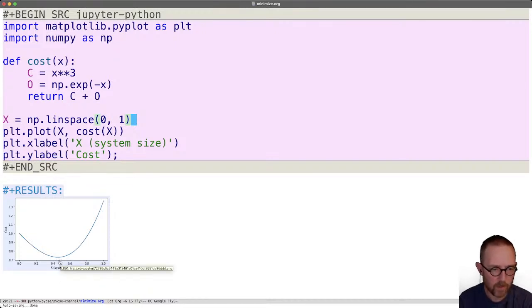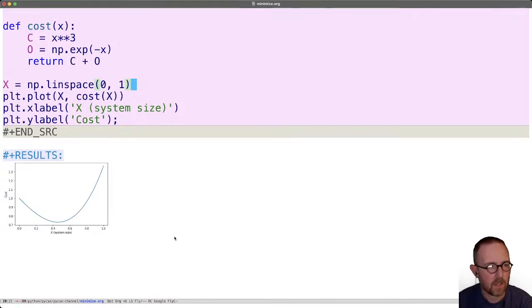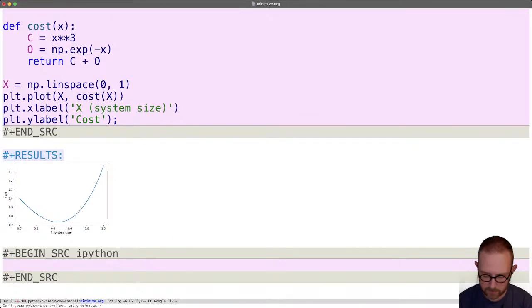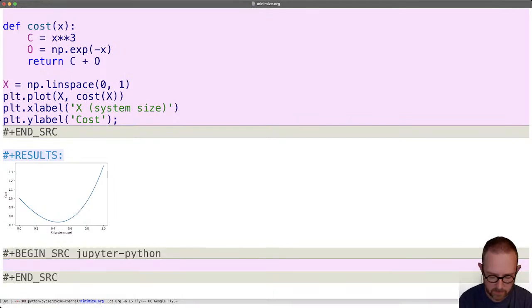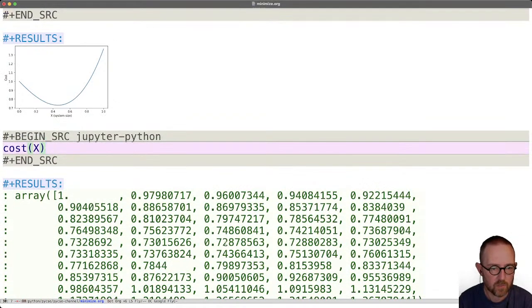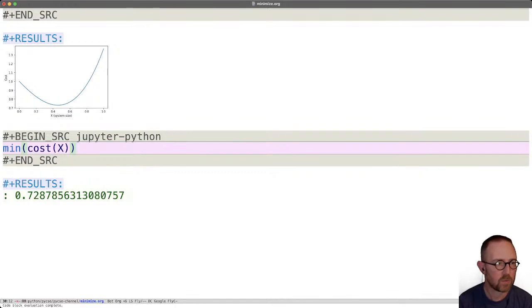Now we could work out a better idea of where that is. So if we just look at the cost of x, that's just an array of all of these points. And you could just look at the minimum, and what this is showing you is the minimum cost, right, so that's the y-axis. It doesn't tell us what is the corresponding x.